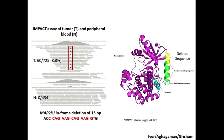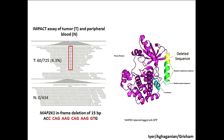The reason it would have been difficult is that this is actually a 15-base pair small in-frame deletion that leads to a deletion within the negative regulatory helix within MEK1. And these tumors have a high amount of stromal contamination — only 8.3% of the reads showed this mutation, with 60 out of 725 reads confirming it. So it's clearly there, but at only 8% of reads, detecting this by Sanger sequencing would have been essentially impossible.